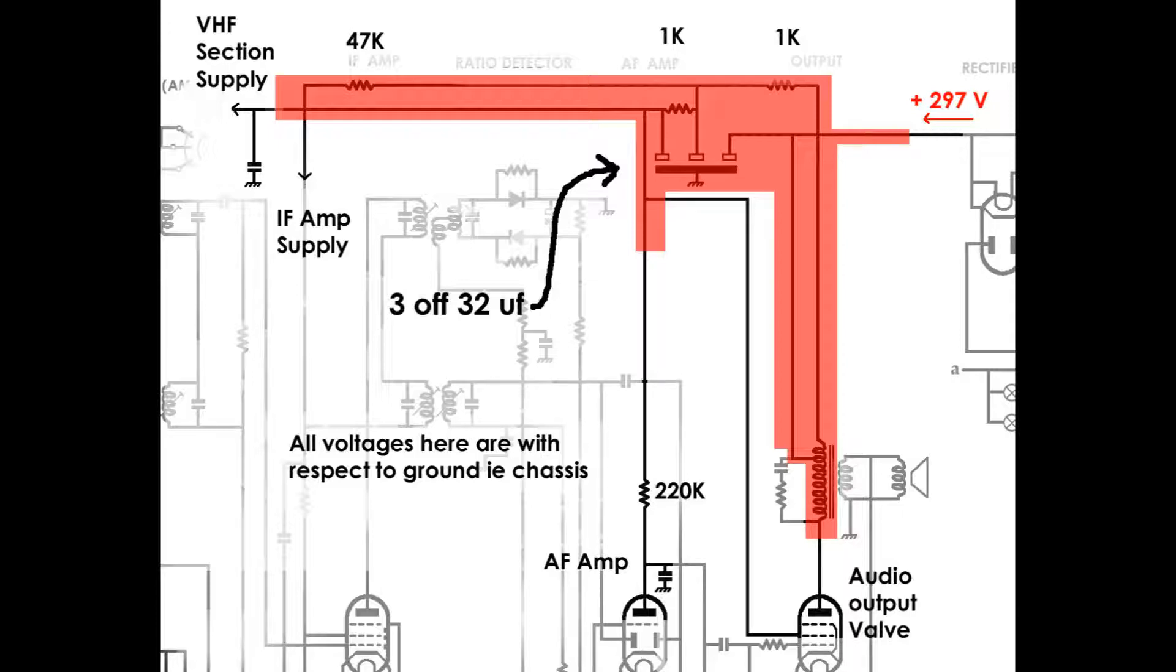Each of these resistors are aiding the smoothing of the supply in conjunction with the relevant capacitors. Coming back to the center capacitor, if we go up and then to the left, we have this second 1K resistor and that feeds the left hand side capacitor.